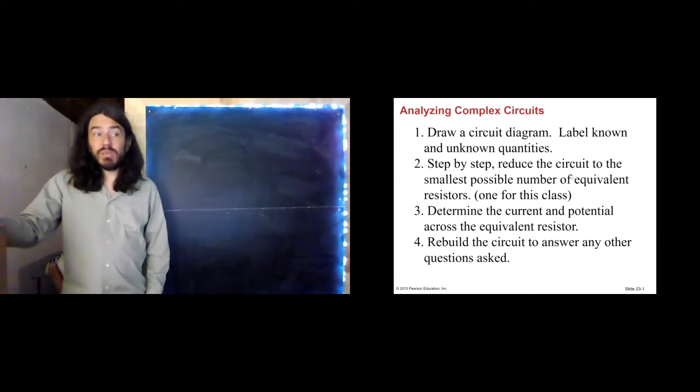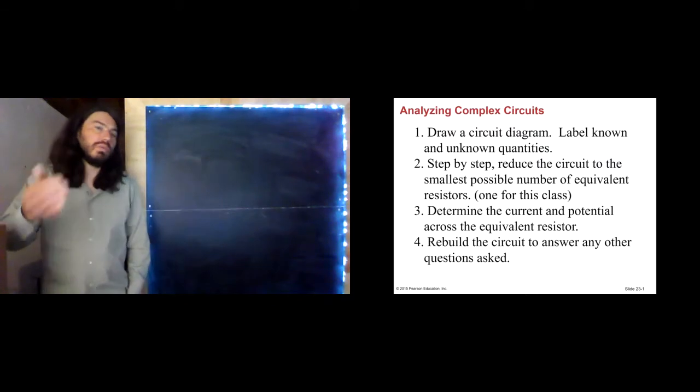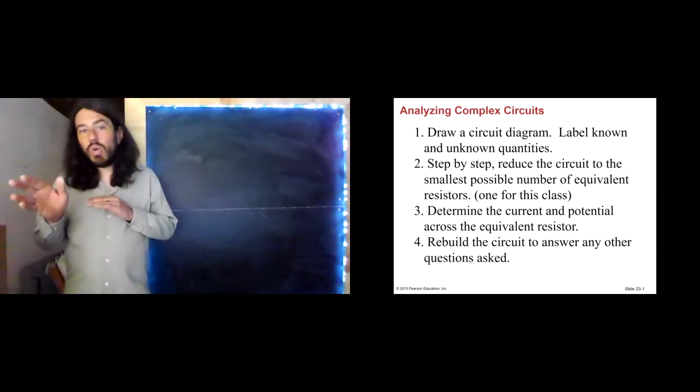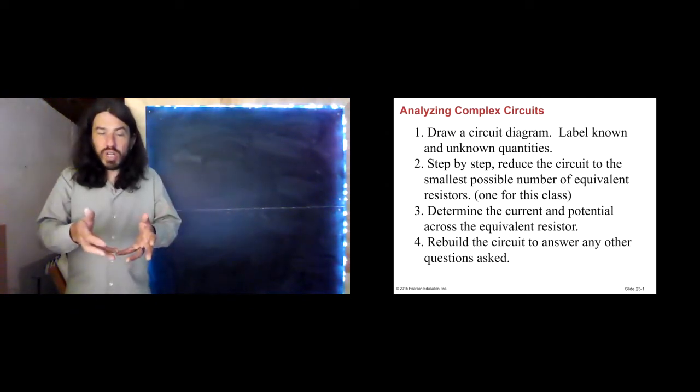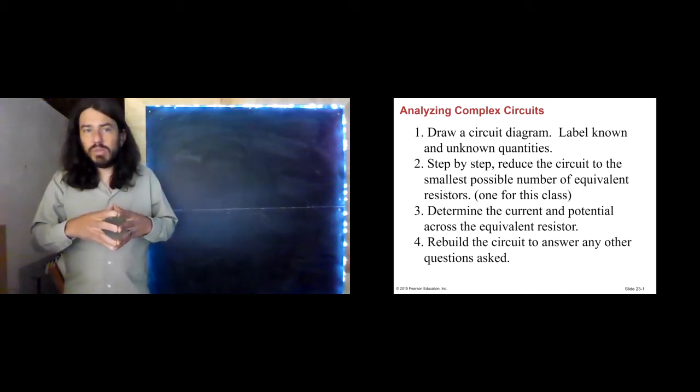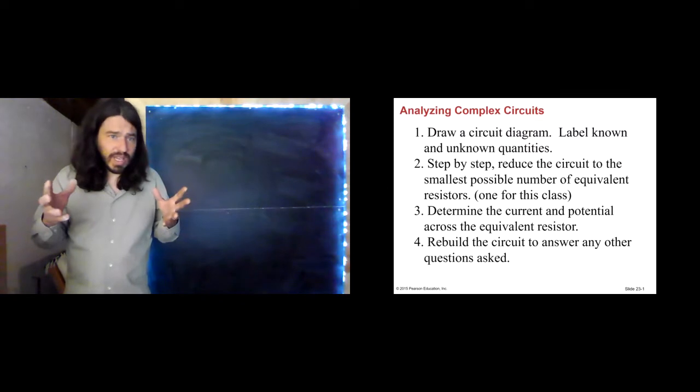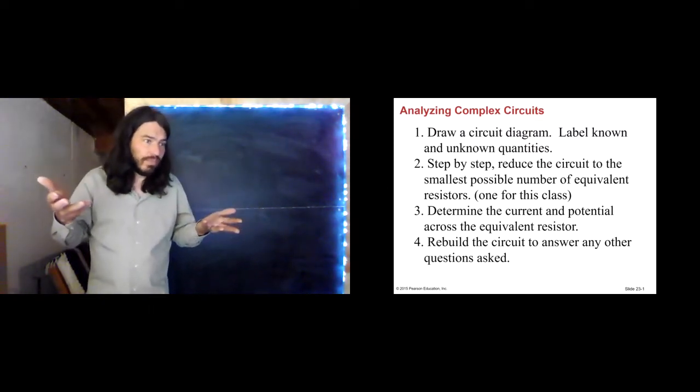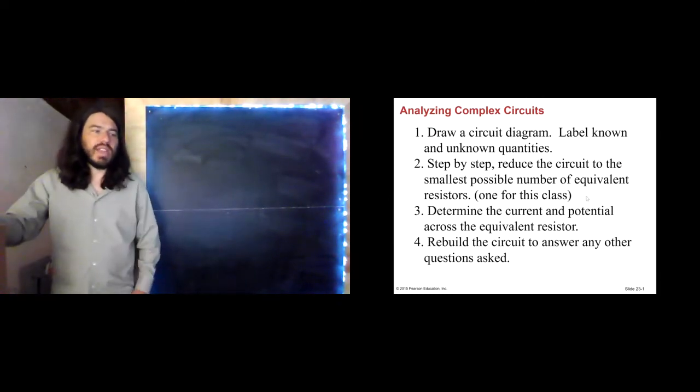Step by step, reduce the circuit to the smallest number of equivalent resistors. In this class, we'll be able to reduce them always to one. What I mean by that is using those rules that we saw in the previous lecture about equivalent resistance of series and parallel circuits, we're going to try and reduce our circuit to the very simplest possible version of it that we can. There are more complicated circuits where you can't do that, but in this class, we'll constrain ourselves to make it so that that's possible.